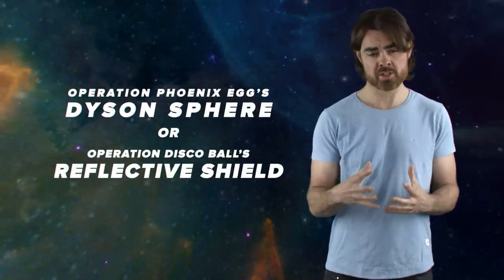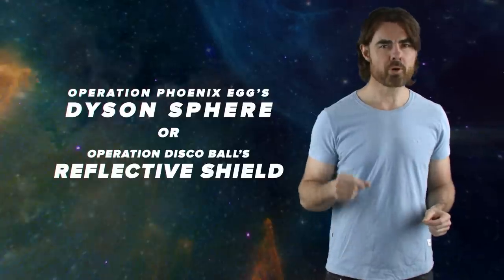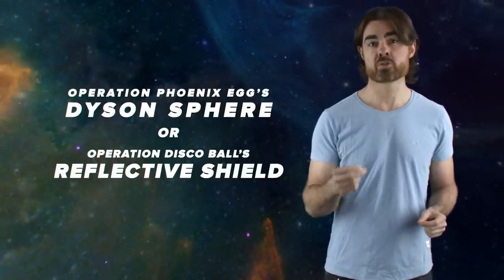You receive a conference call from various world leaders. They've heard that you watch PBS Space Time, and so they want your opinion on the plans. Which do you recommend as slightly less hopeless? Operation Phoenix Eggs Dyson Sphere, or Operation Disco Ball's reflective shield? The president is especially upset, so draw a nice Penrose diagram of the situation to show why your preferred plan has the best shot.